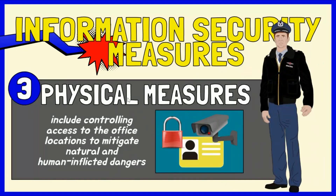Threats can also be physical. Natural disasters such as fires and floods, human-inflicted dangers including theft and vandalism, physical or armed assaults, and even systematic hardware failures are considered threats to a company's information system. Physical measures include controlling access to the office locations.